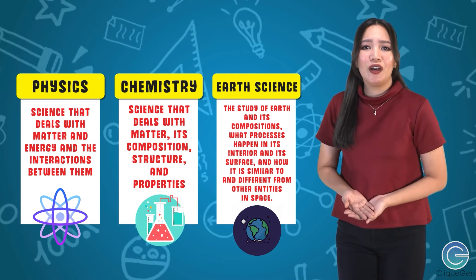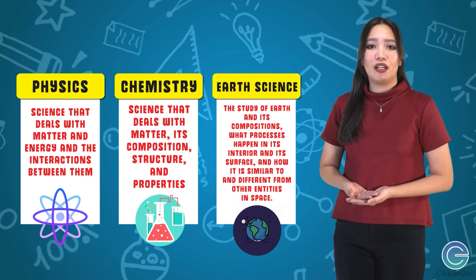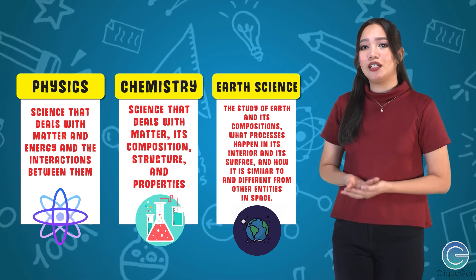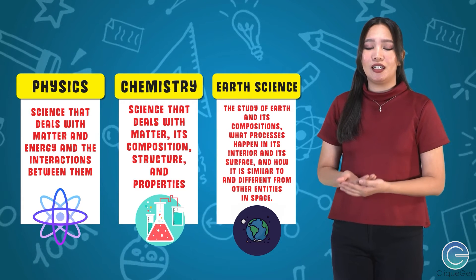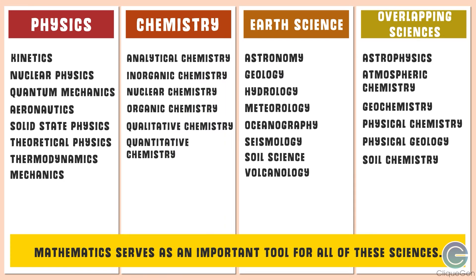This table shows some of the different fields of science under the category of physical sciences. It also shows some of the overlapping sciences.